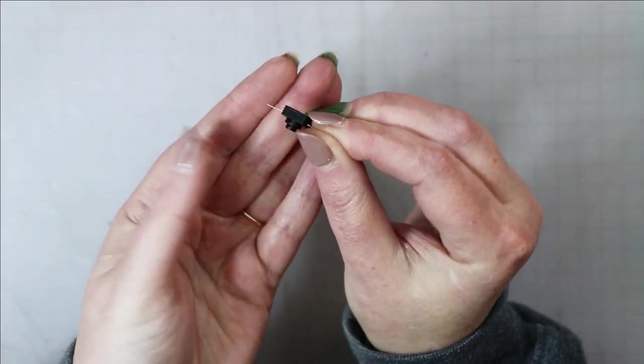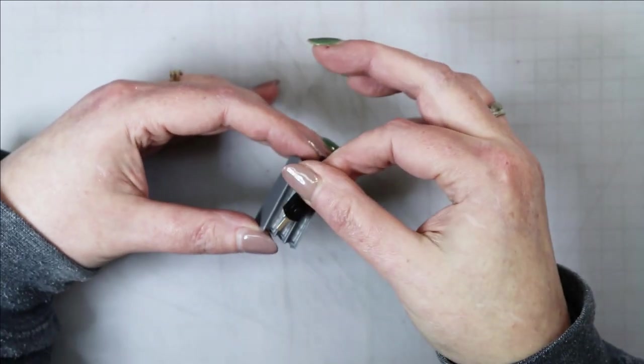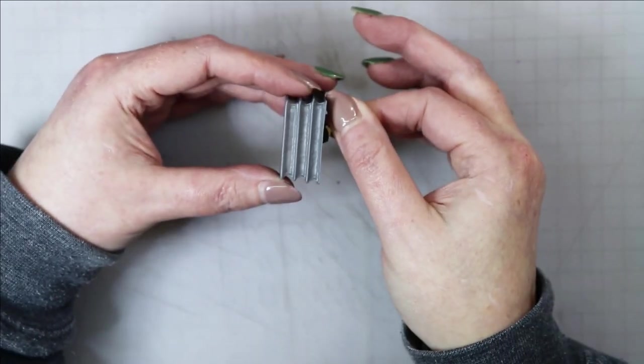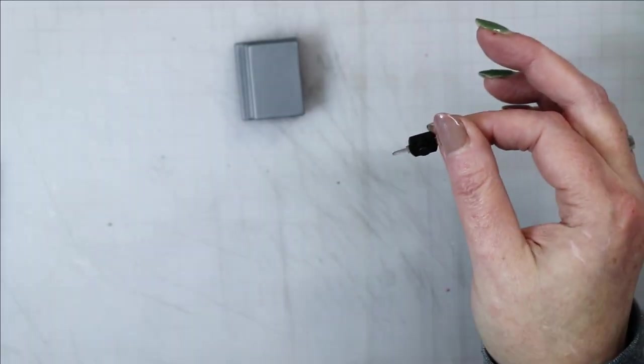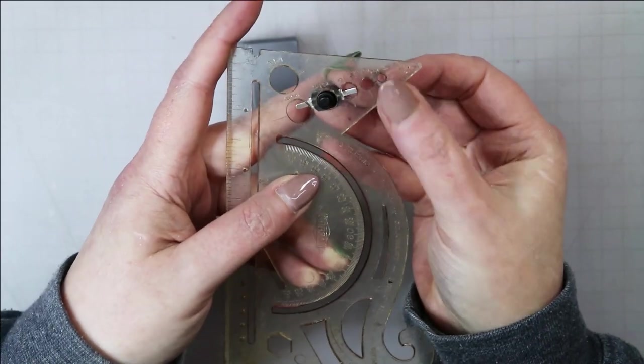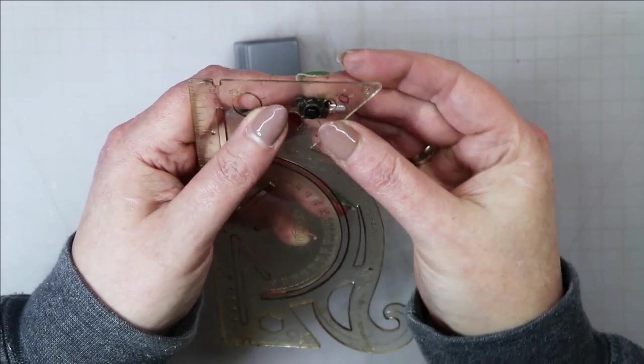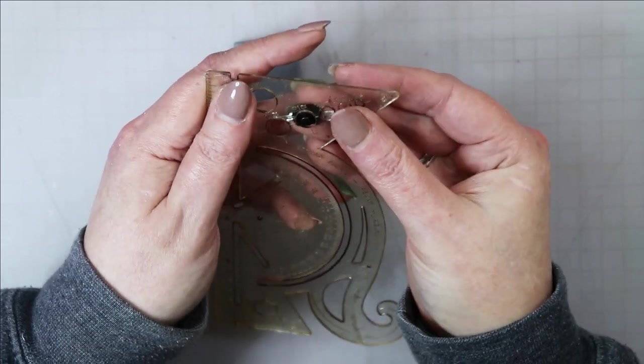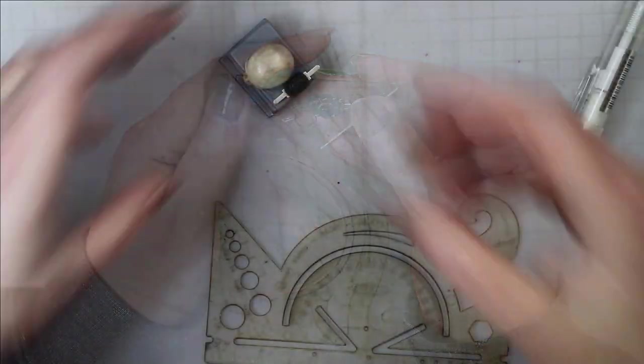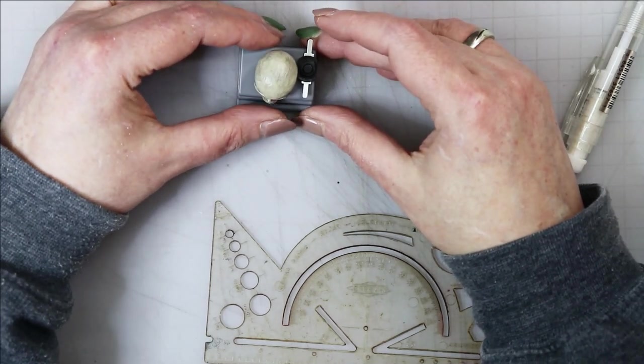Once the base was dry I needed to figure out where I was going to put the switch. These tiny little micro switches are great because they don't take up a lot of room, so I just needed to measure the diameter of the switch. I did that with a circle template to figure out where to place the hole on my light.